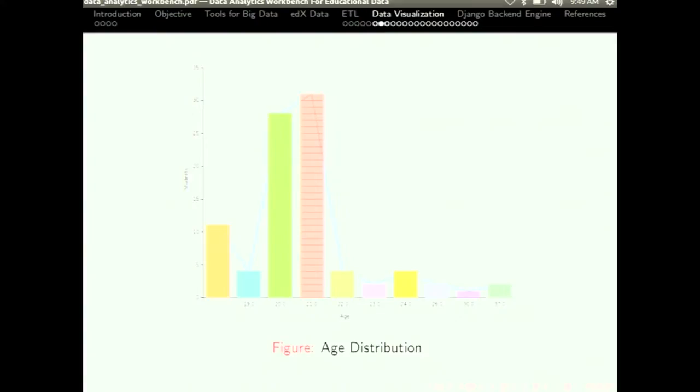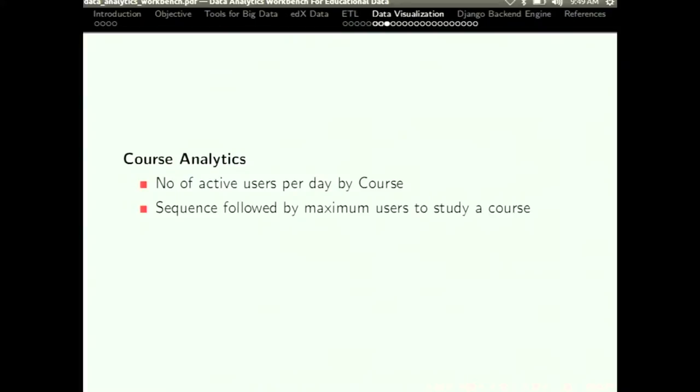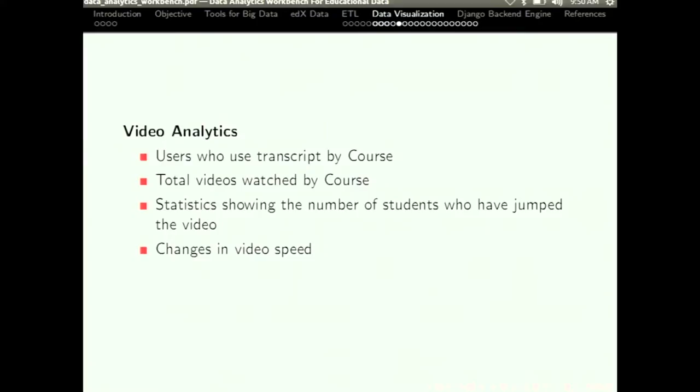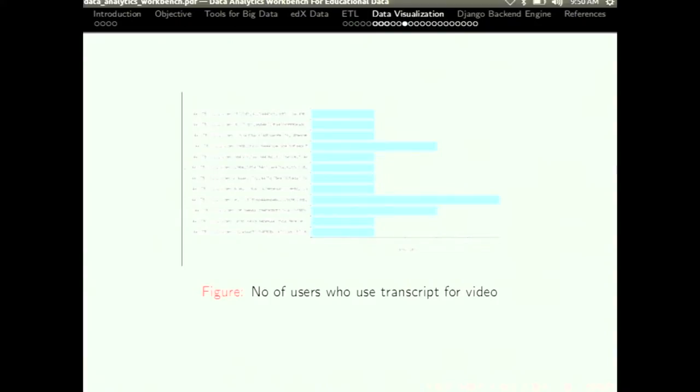The student analytics, enrollment analytics, problem analytics and the questionnaire analytics. So, I will tell you some of the queries we implemented. One of the graphs, this graph shows the age distribution. That is, the age distribution of the users who have registered for a particular course. Now, the second category which we categorized are analytics was the course analytics. In course analytics, one of the graphs was active users per day. That is, the number of users active per day in a particular course. The next one was video analytics. Video analytics has these queries. And one of the examples is number of users who use transcript for a video. This is basically the number of users who use subtitles to understand the video in a particular course.